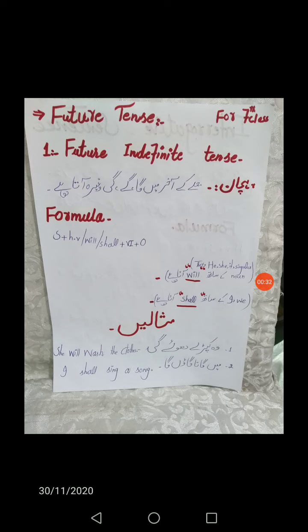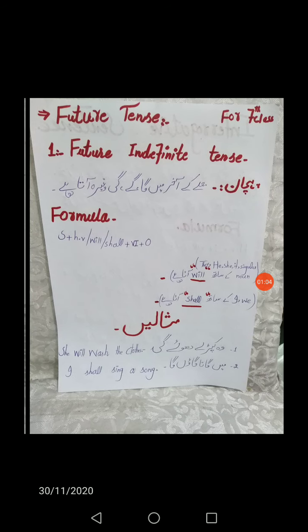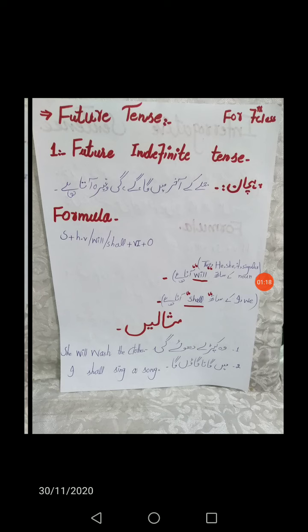Future tense — what is future tense? Future tense کی پہچان یہ ہے کہ جملے کے آخر میں گا، گے، گی وغیرہ آتا ہے۔ Future indefinite tense کا formula: سب سے پہلے subject، پھر helping verb — will یا shall — اس کے بعد verb کی first form، پھر object۔ She, he, it یا کسی بھی singular name کے ساتھ will آتا ہے، جبکہ I اور we کے ساتھ shall آتا ہے۔